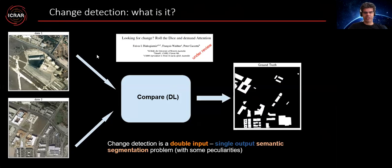What is change detection? In terms of computer vision definitions, change detection is the process where we take two images and produce a single semantic segmentation mask.